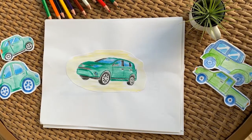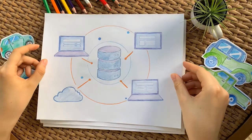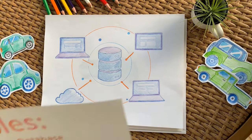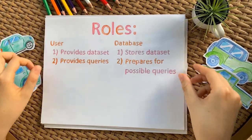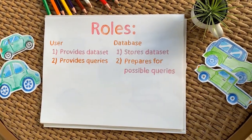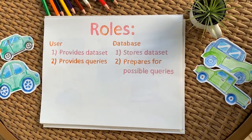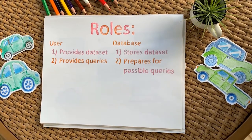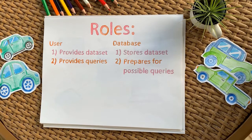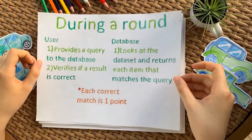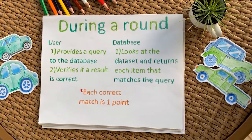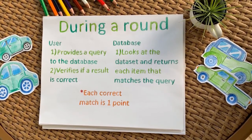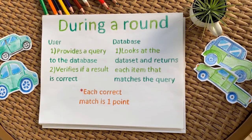To help you better understand the role of a database and the relationship it has with the user, we have created a simple game for you to play. In this game, there are two roles: the user and the database. The user has to come up with a set of queries and a data set. Once the user has done that, they give the data set to the databases. The people playing as the databases will then need to store that information and prepare for the queries. The number of queries the user has will determine the number of rounds, so for each round the user asks one query. Each time a database correctly matches an item with a query, they get one point. Whoever has the most points wins.